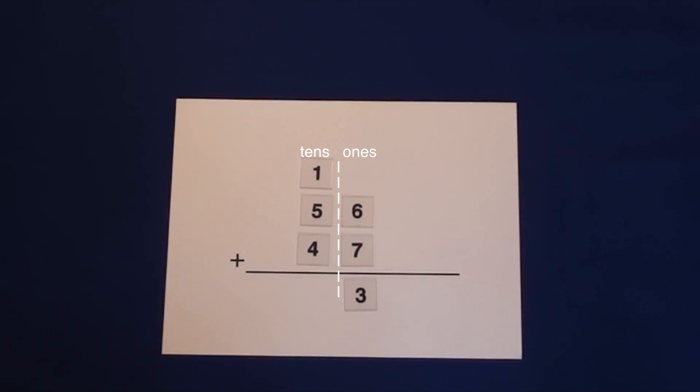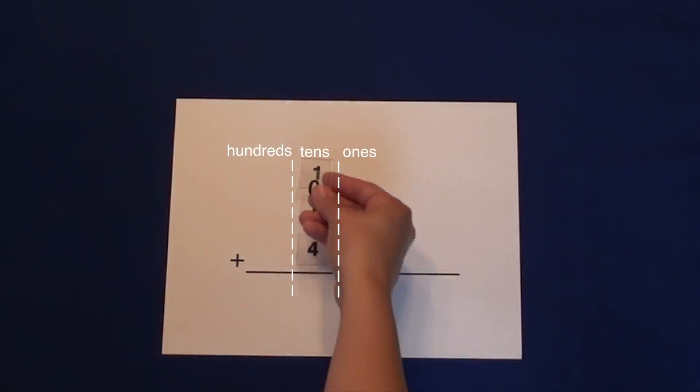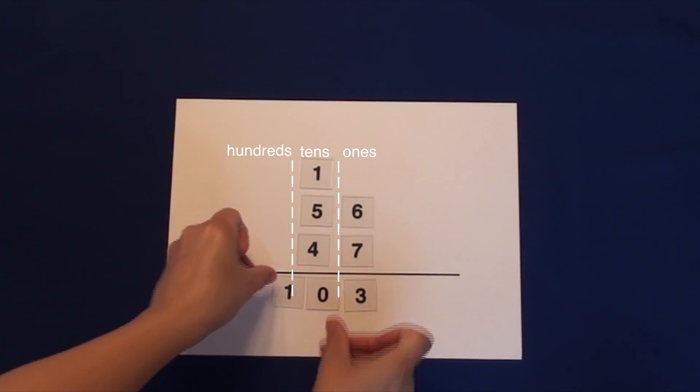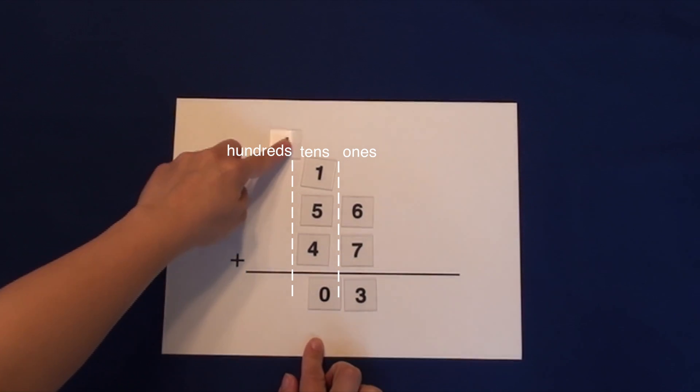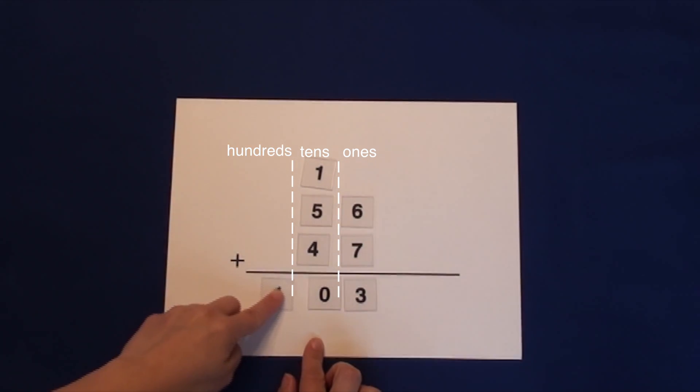Now we'll add the tens. 1 plus 5 plus 4 equals 10. 10 tens is 100. We will carry the 1 into the 100's column and leave the 0. Since there are no hundreds to add to the 1, it will drop right down to the solution.